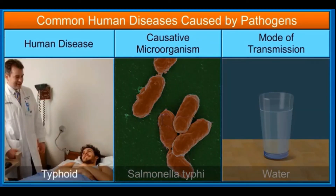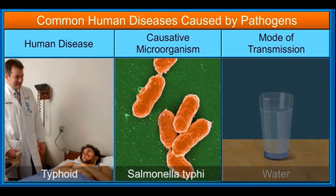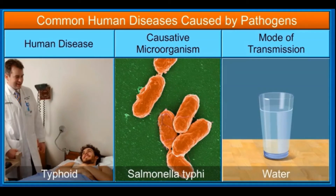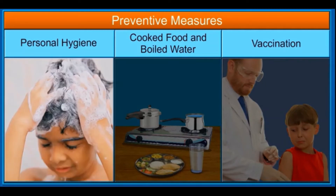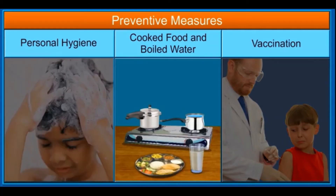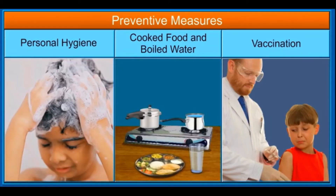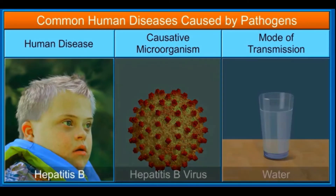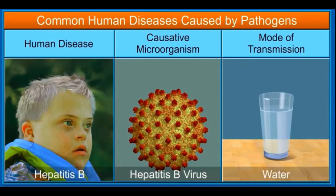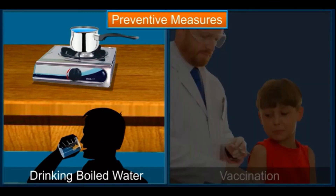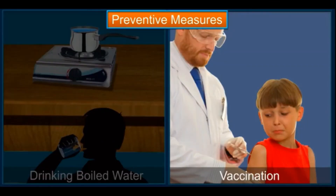Typhoid is caused by the bacterium Salmonella typhi and transmitted mostly via water. To prevent its spread, we should follow personal hygiene, consume properly cooked food and boiled water, and get proper vaccination done. Hepatitis B is caused by the hepatitis B virus and transmitted through water. It can be prevented by drinking boiled water and proper vaccination.